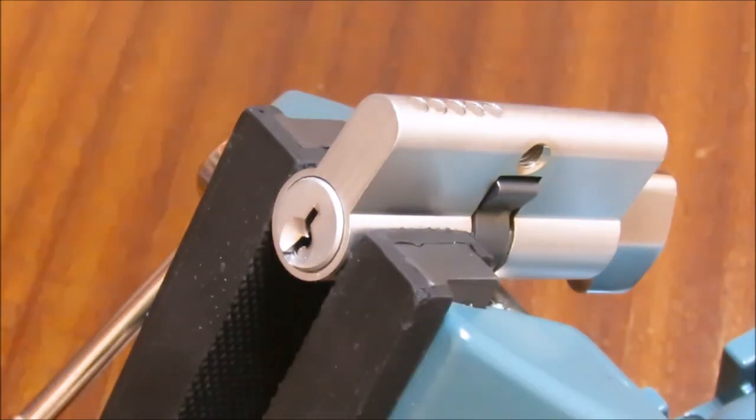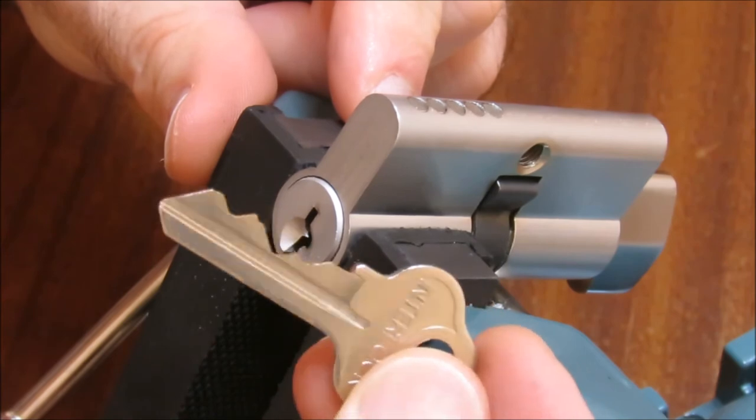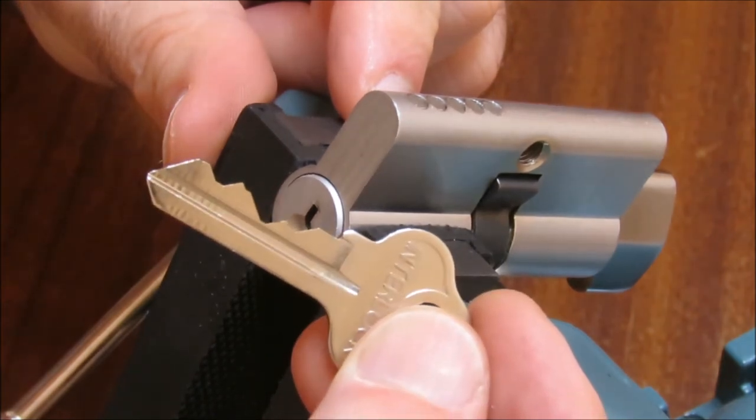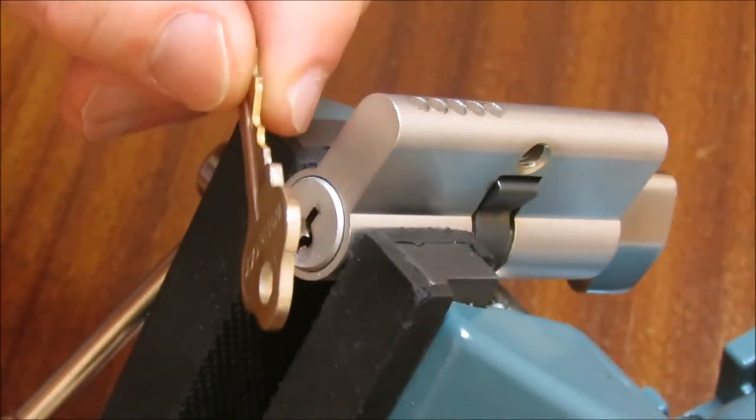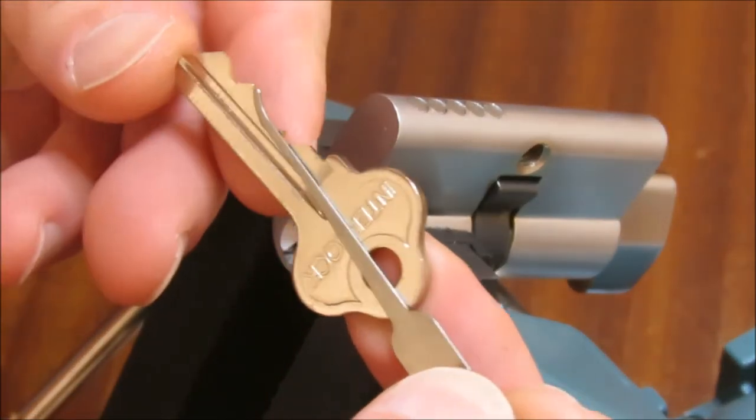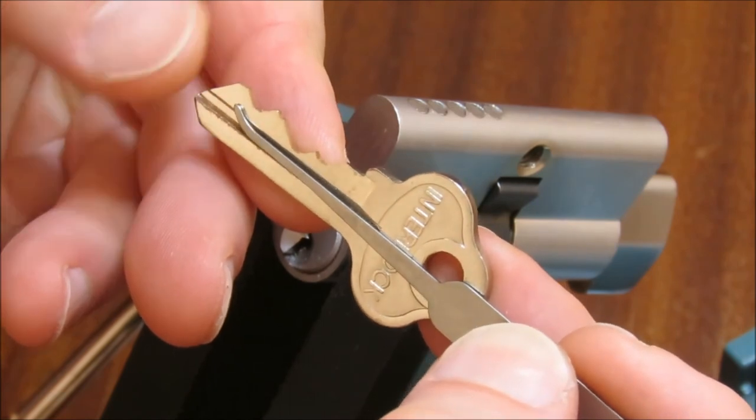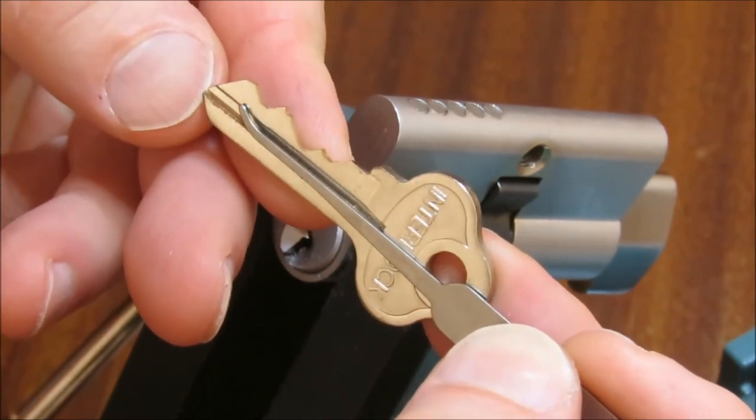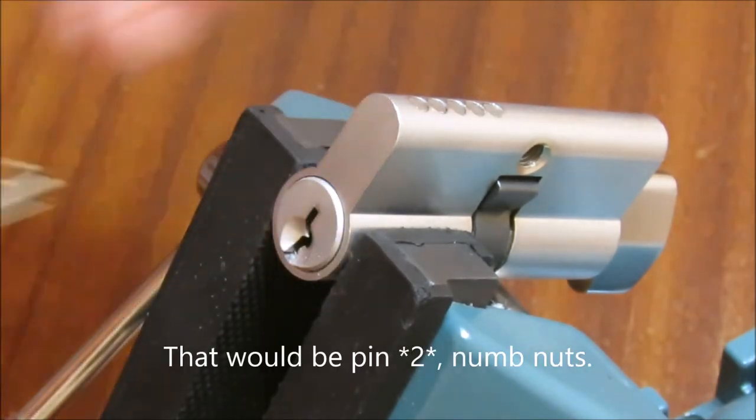Okay lads, we're back in business. Now I have deliberately chosen a fairly difficult wheel lock. Five pin euro, difficult bitting. So I can tell you for a fact, you cannot pick this with a Sparrows short hook. If you have a look there, there is just no way that you can get up and set pin five without over setting pin three on this thing with a short hook. It just can't be done.